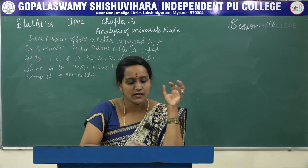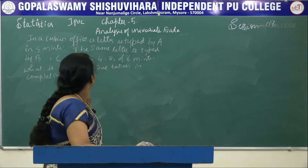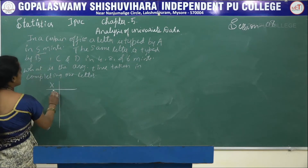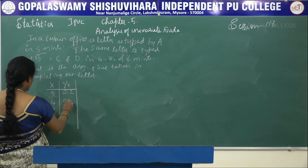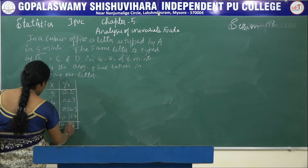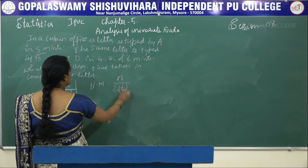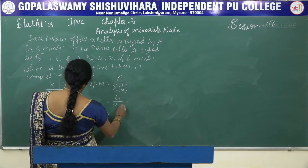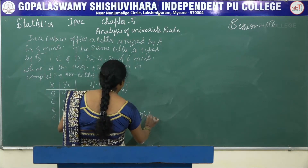Since we are typing the same letter, the appropriate average is harmonic mean. The X values are 5, 4, 8, and 6. Taking 1/X: 0.2, 0.25, 0.125, and 0.167. The total summation of 1/X is 0.742. HM is N divided by summation of 1/X. N is equal to 4, so HM is 4 divided by 0.742, giving HM equal to 5.39 minutes per letter.